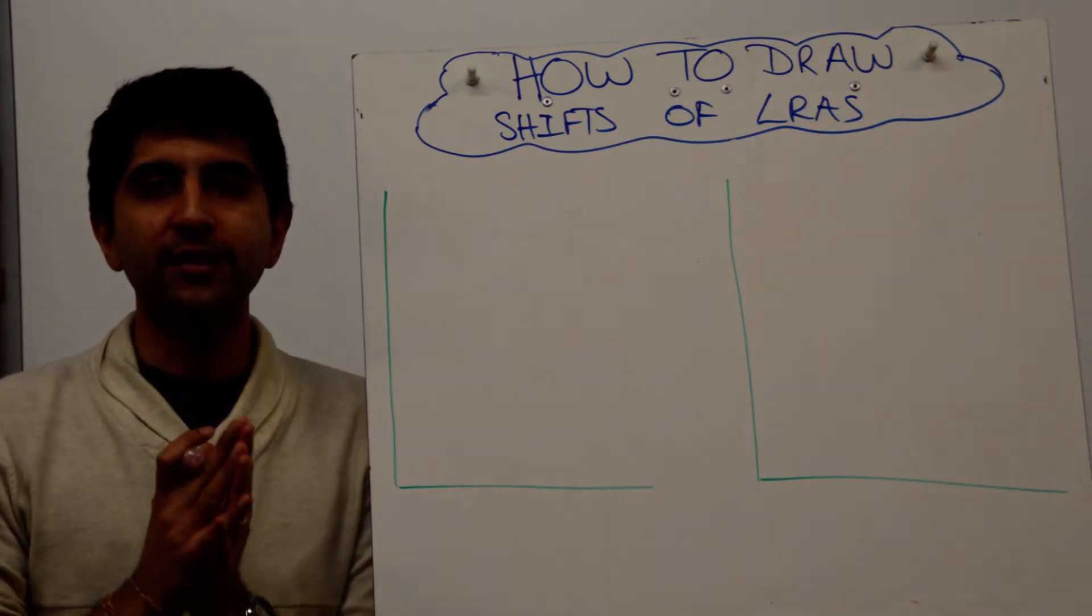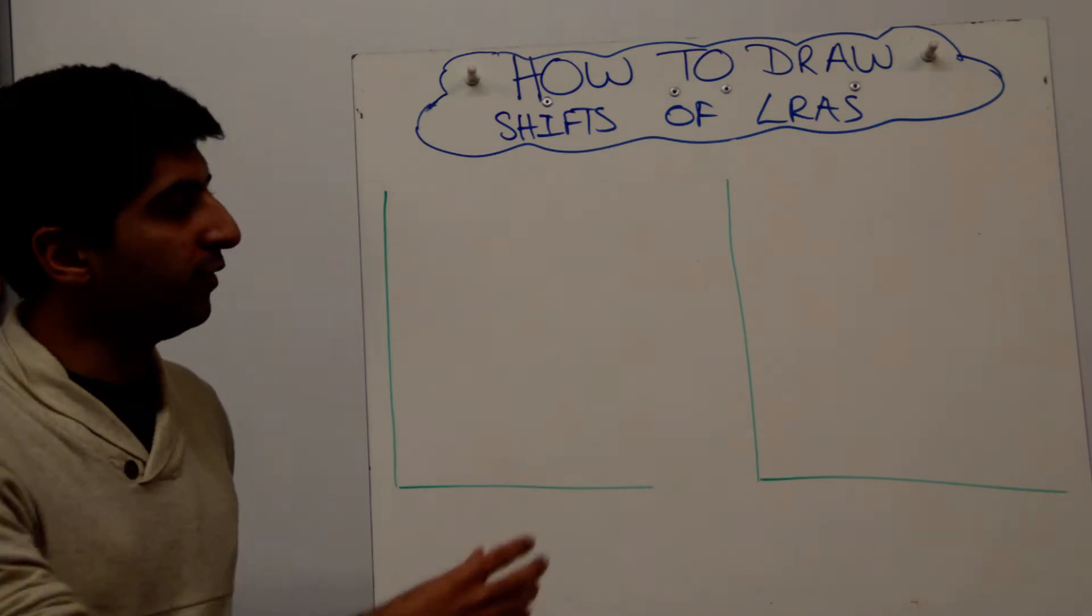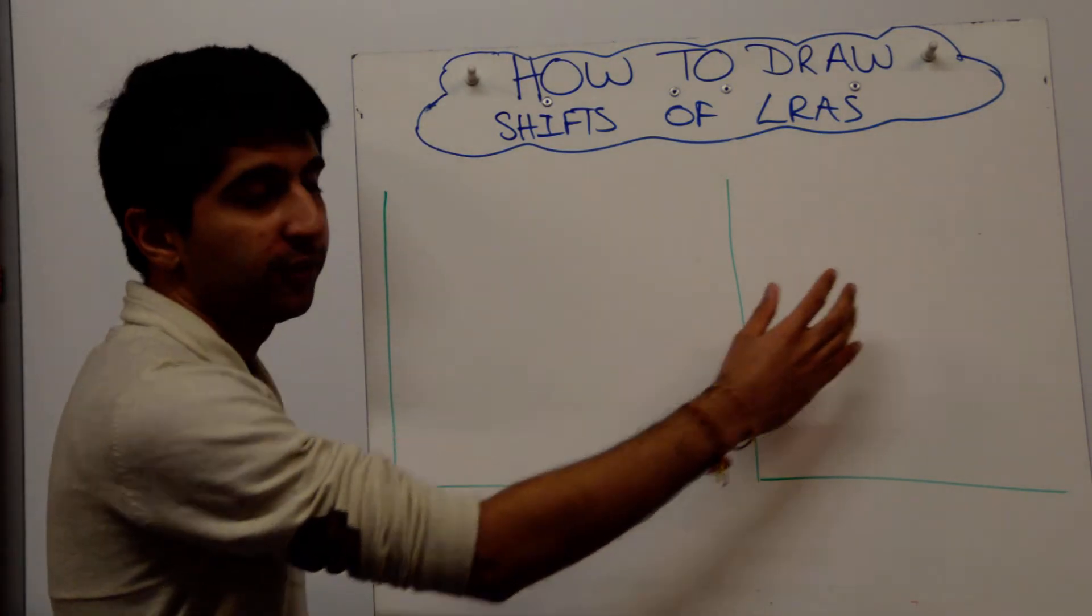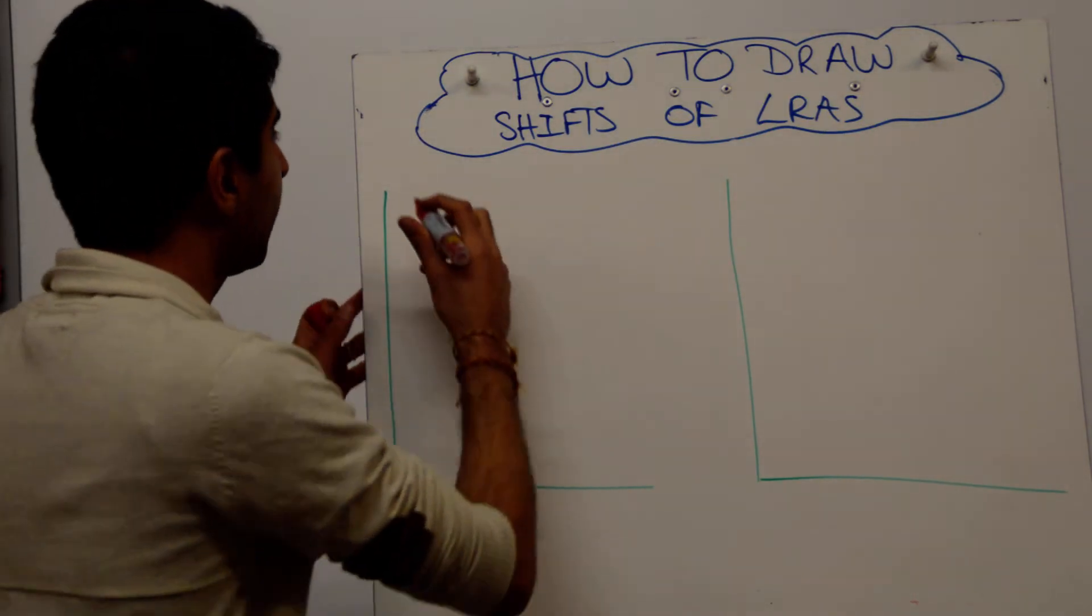Well, my philosophy is to keep it really simple. There are two different ways in which you can do this. You can use the classical model, you can use the Keynesian model, but just keep it really simple. Let's start with the classical model.